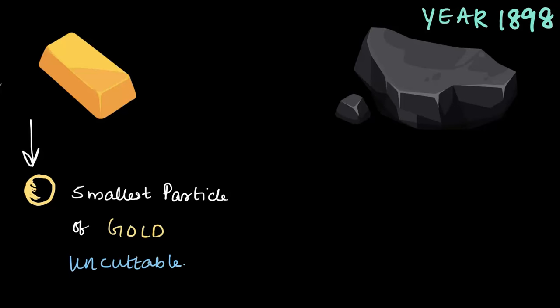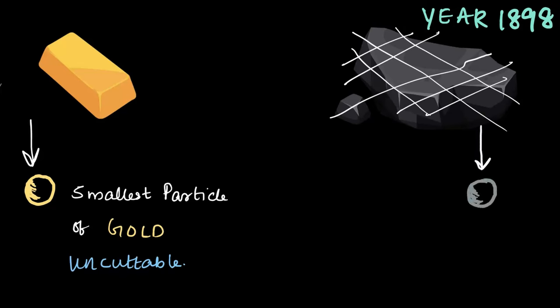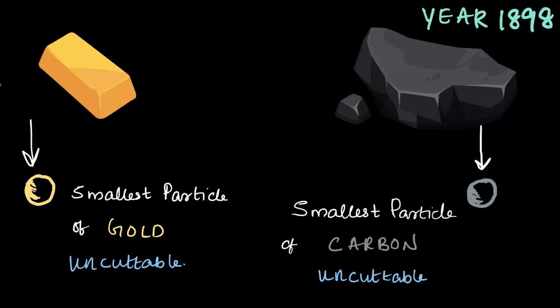Now let's consider our graphite here. As you may know, graphite is just another form of carbon. If we start cutting it in the same way, piece by piece, eventually we'll reach a single particle of carbon again. Just like gold, this particle is the smallest particle of carbon and it is again uncuttable.